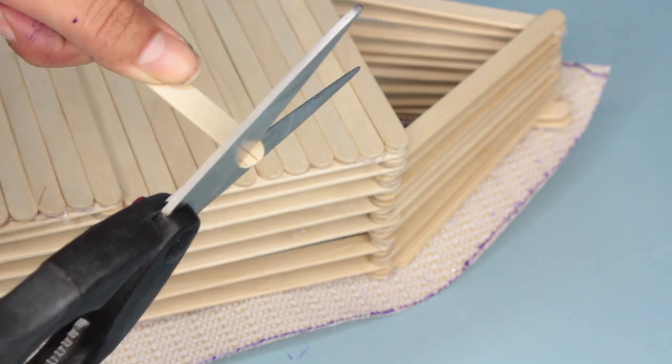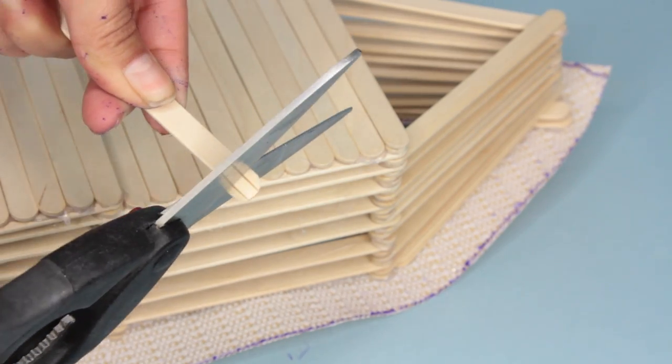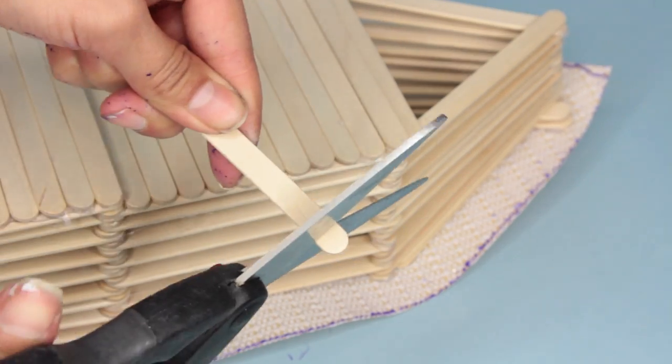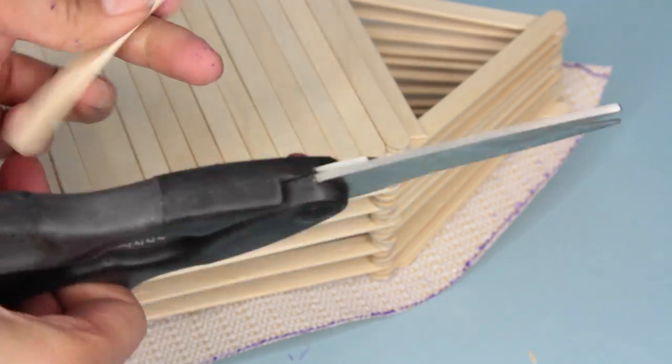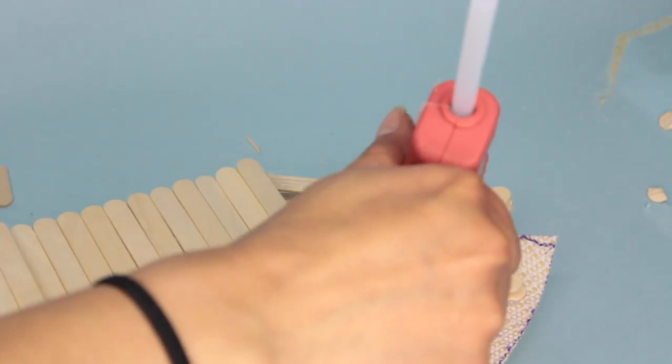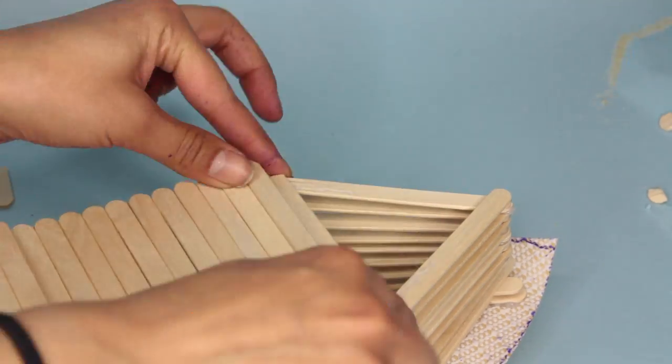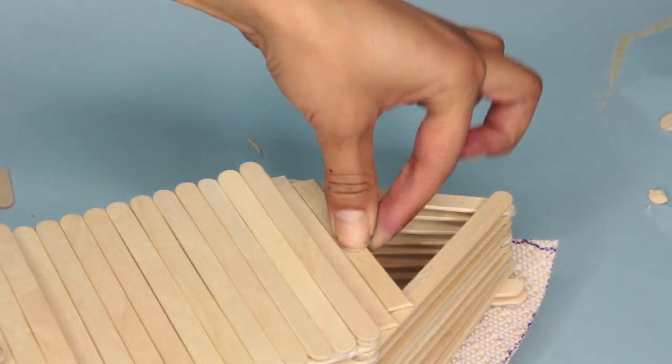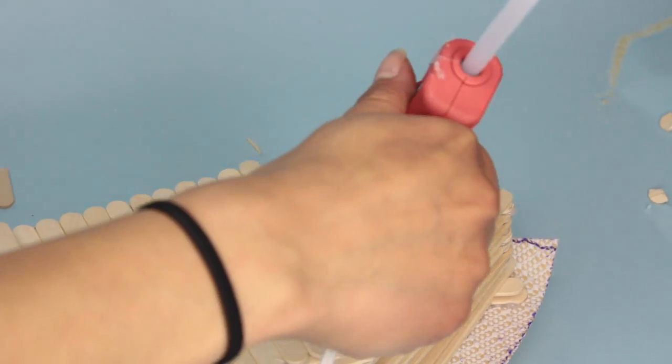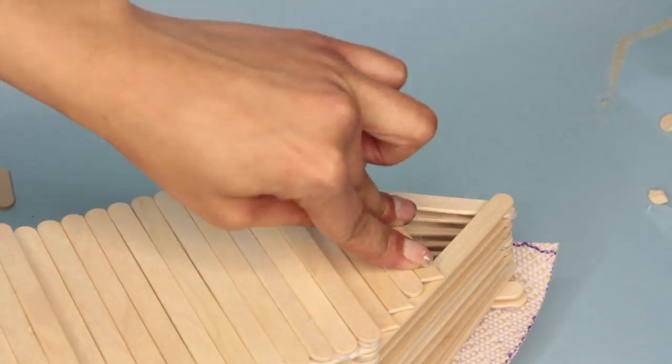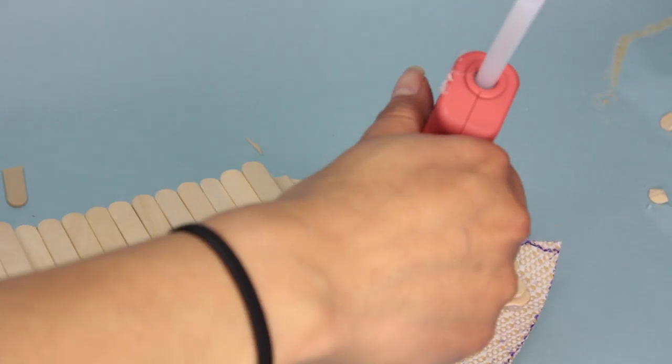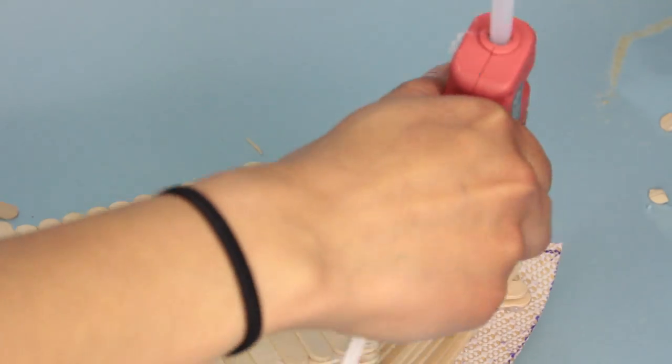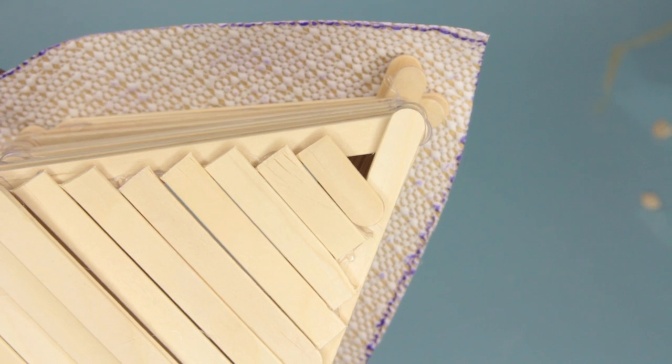Now when you get to the top, you're going to need the popsicle sticks to be smaller. So what you do is you just take a scissor and cut it. Be careful when doing it because if you just take the scissor and straight up cut it, you're going to end up splitting the popsicle stick. So just kind of do it slowly so the only part that splits is the part that you don't want. Don't throw away the ends that you didn't use that split just yet. You're going to end up wanting to use them.